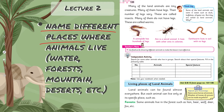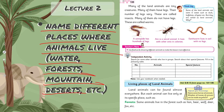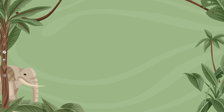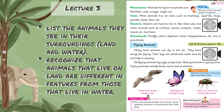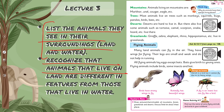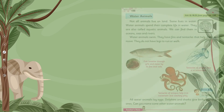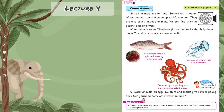In Lecture Number Two, the students will be able to name different places where animals live, like water, forest, mountain, desert, etc. In Lecture Number Three, the students will be able to list the animals they see in their surroundings — any animals from water or land — hum unko list kareenge, alag alag hum inko categorize kareenge. They will also be able to recognize the animals that live on land and how they differ in features from those that live in water.